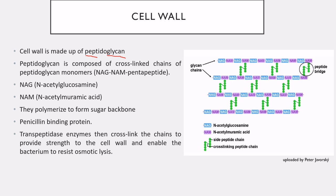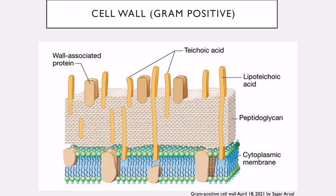The cell wall enables bacteria to resist osmotic pressure and osmotic lysis. NAG and NAM are the two moieties of the glycan sugar backbone — they form chains, and the chains are interlinked via peptide bridges.